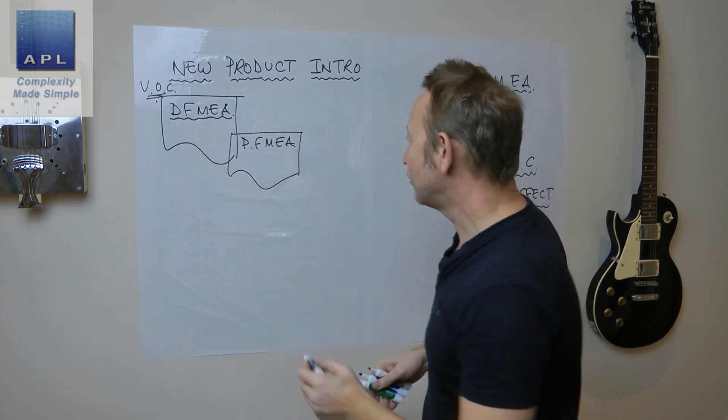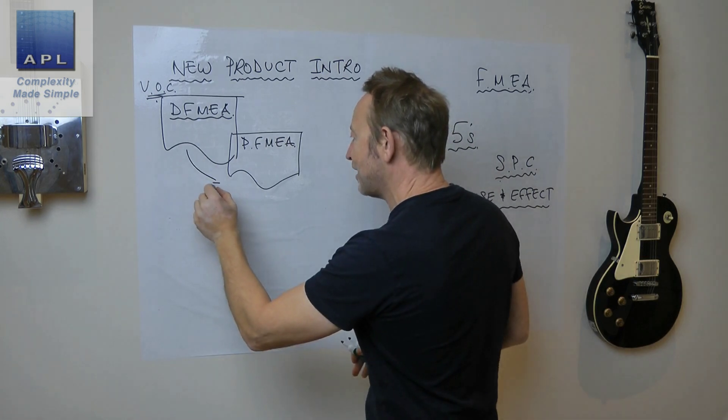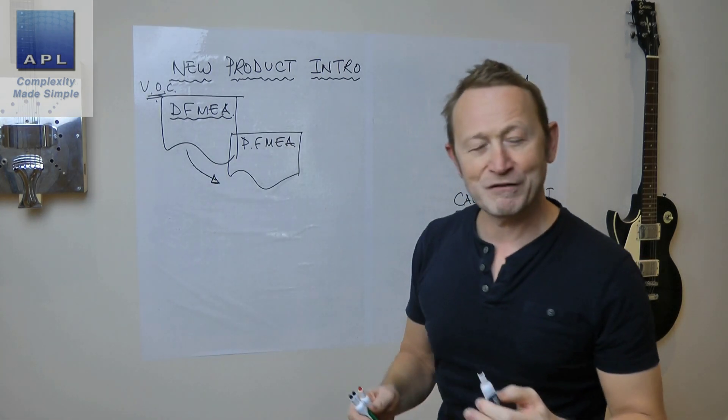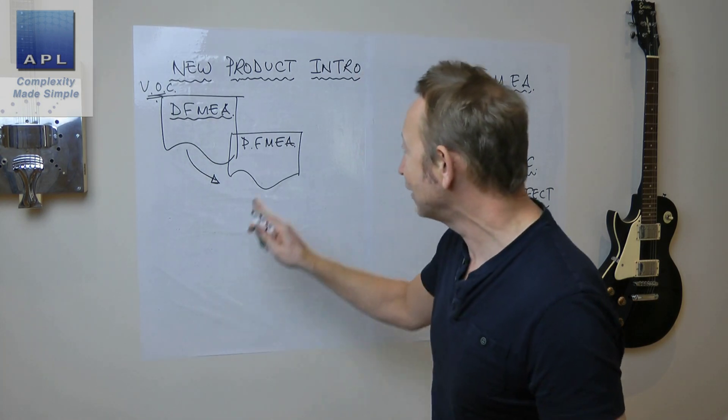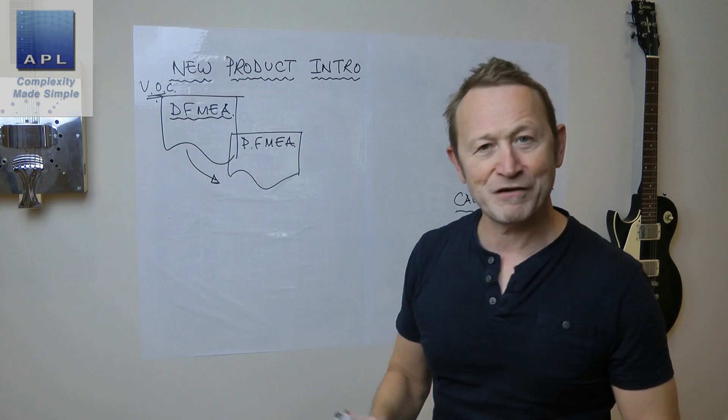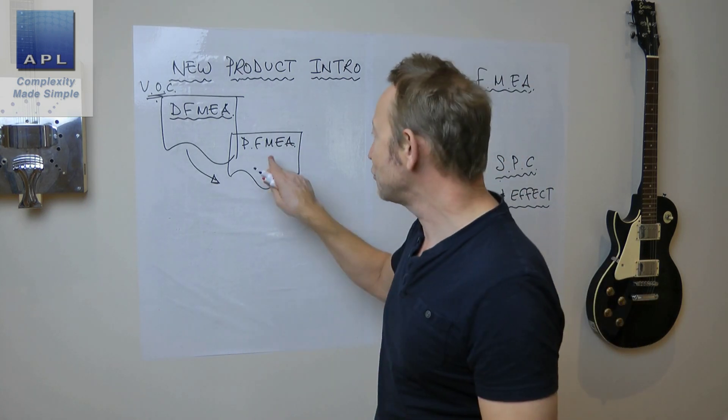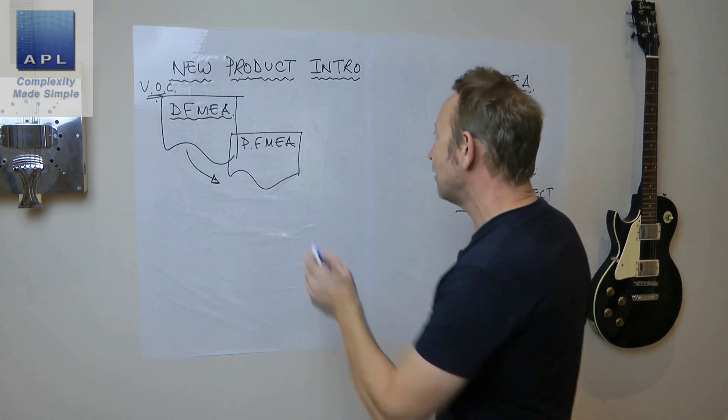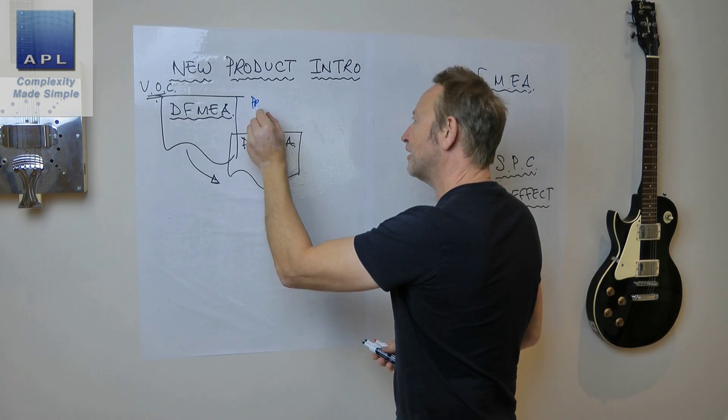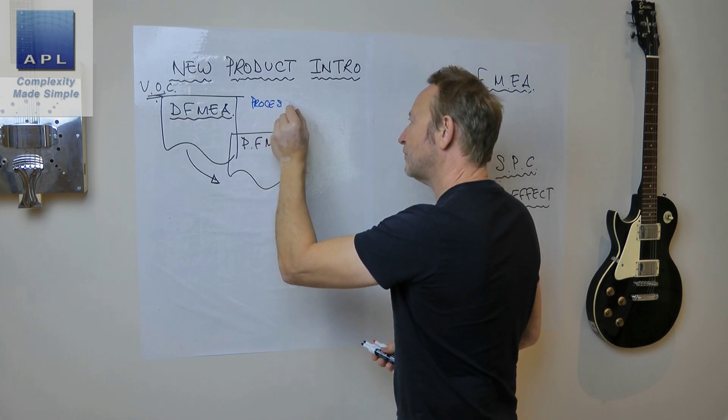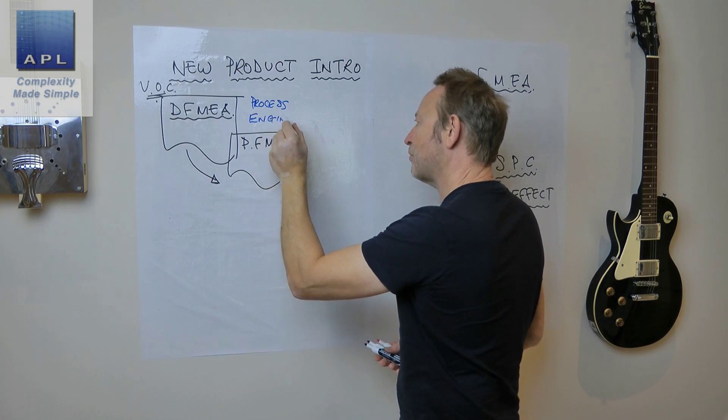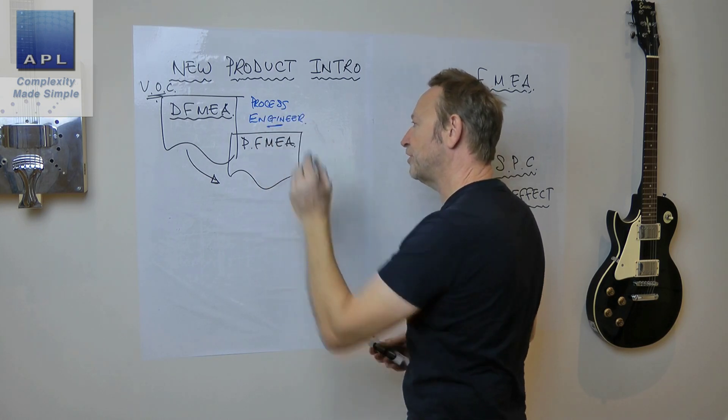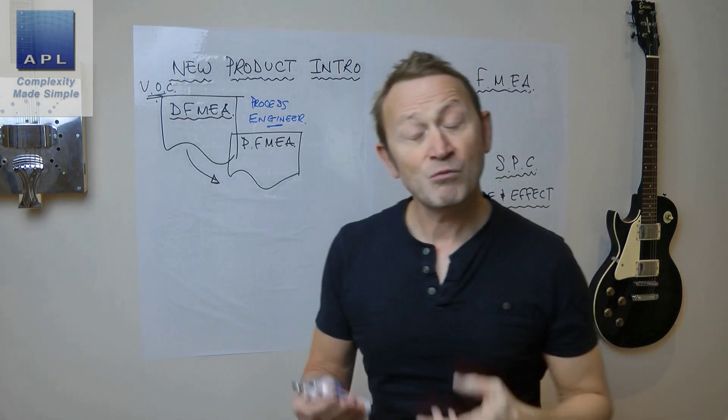All the tolerances and design intent sits in here. This is the designer's thought process. The designer's thought process then passes all the information like tolerances and surface finishes into the process FMEA. This is the working document of the process engineer.